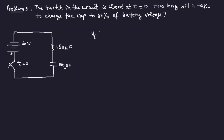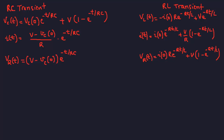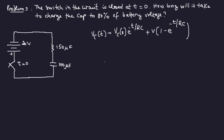VC(t) equals VC(0) times e to the power minus t over RC, plus V times (1 minus e to the power minus t over RC). The initial voltage on the capacitor is zero because the circuit is initially open — the switch is closed at t equals zero, so originally the circuit was open and the initial voltage is zero. So the first term drops out.